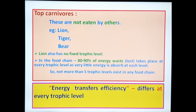Lion also has no fixed trophic level. In the food chain, 80–90% of energy is wasted at every trophic level, as very little energy is absorbed at each level. So not more than 5 trophic levels exist in any food chain — whether grazing, detritus, or parasitic food chain — there are not more than 5 trophic levels.